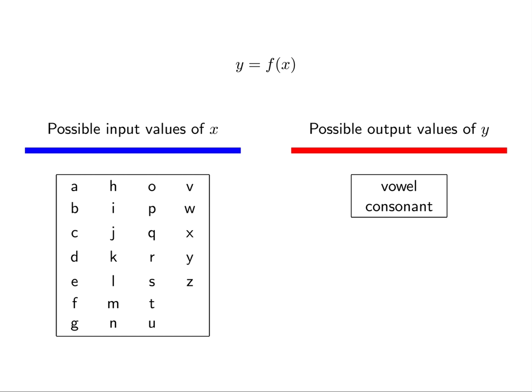The set of possible output values is called the range. Here, the range is the set consonant, vowel.